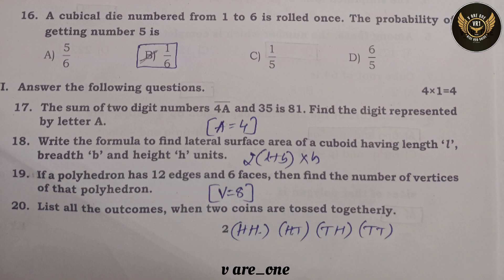Eighteenth question: write the formula to find the lateral surface area of a cuboid having length L, breadth B, and height H. Answer: 2(L + B) × H.